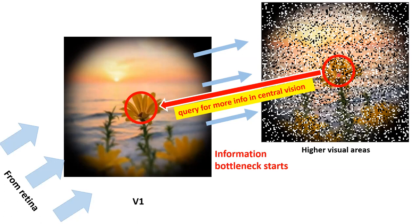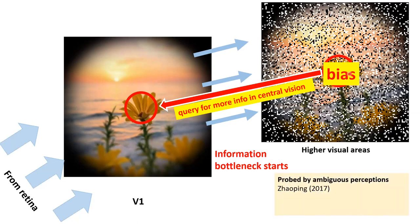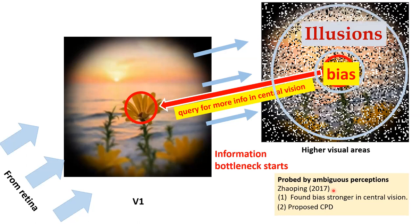This query for more information can happen within a narrow bottleneck. However, because the query uses your internal model, it introduces bias. This bias from internal models was something we measured with ambiguous perception, and we found this bias to be stronger in central vision. That was the motivation for me to propose the Central Peripheral Dichotomy: peripheral vision has only feedforward signals and no feedback query. Without feedback, you have to believe whatever the feedforward signal tells you — and therefore you can have illusions.